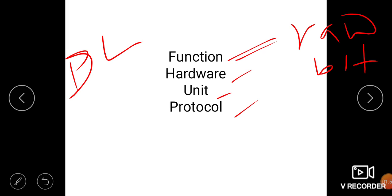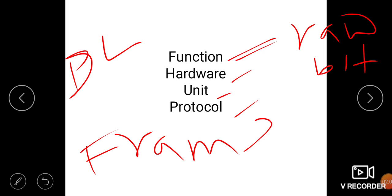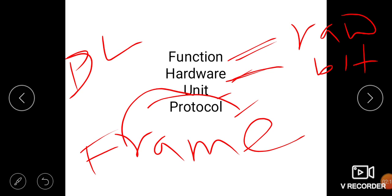In the data link layer, the functions are error control, flow control, and framing. Framing is a very important part of the data link layer. The hardware used is bridge, and the data unit is frame.